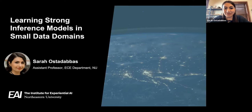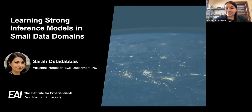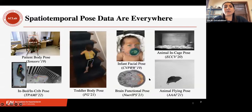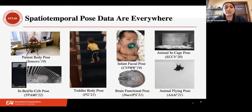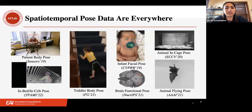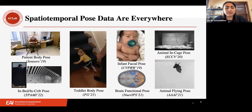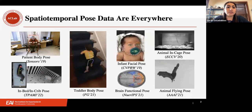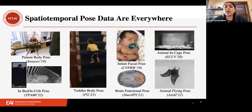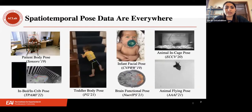Thank you so much, Ricardo and the Institute for inviting me. I'm very excited to talk about this topic on how we learn a strong inference model — learning accurate as well as robust machine learning algorithms when we have the problem of data shortage. I am Sara Ostadavats, an assistant professor of electrical and computer engineering at Northeastern University. This talk is the continuation and expansion of my talk last week during the lightning talk of the inaugural event for our institute.